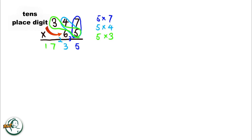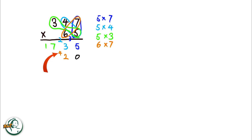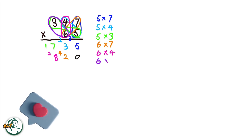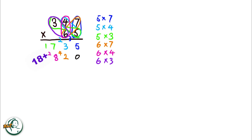Moving on to the tens place digit, 6. We start by writing down a 0. Then we multiply 6 by 7, giving us 42; we write down the 2 and carry over the 4. Next, we multiply 6 by 4, resulting in 24. Adding the carried over 4 to 24, we get 28; we write down the 8 and carry over the 2. 6 multiplied by 3 is 18; adding the carried over 2 to 18, we get 20.